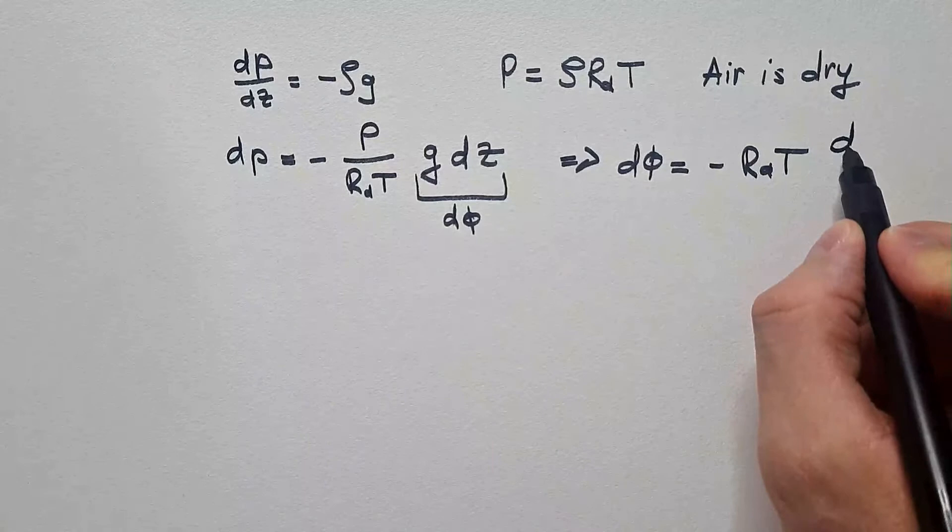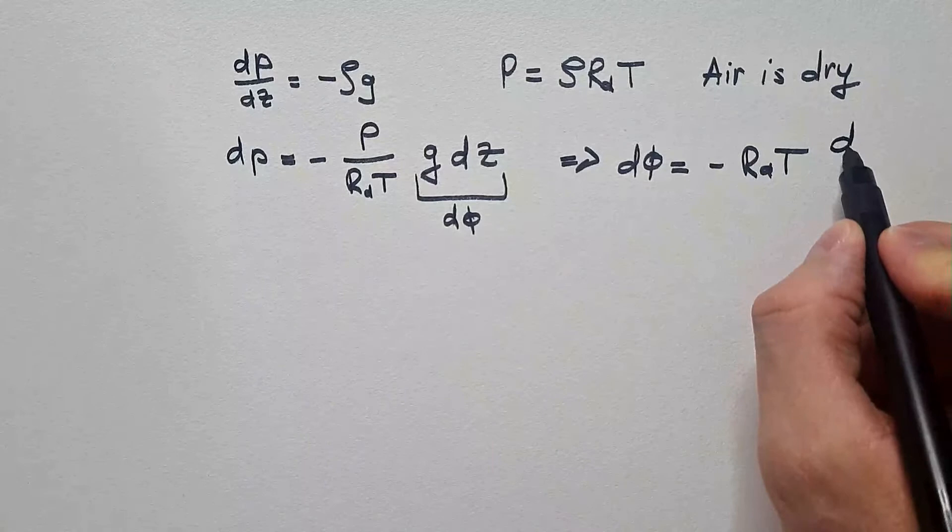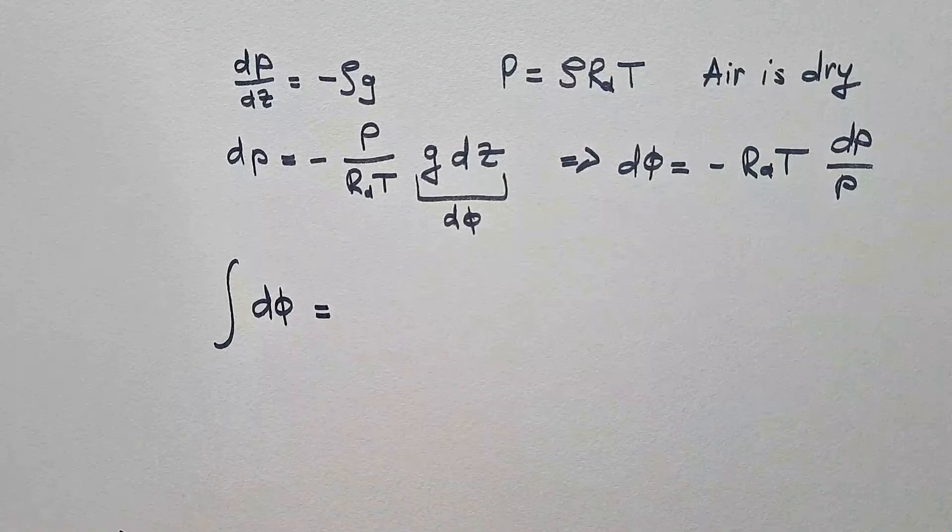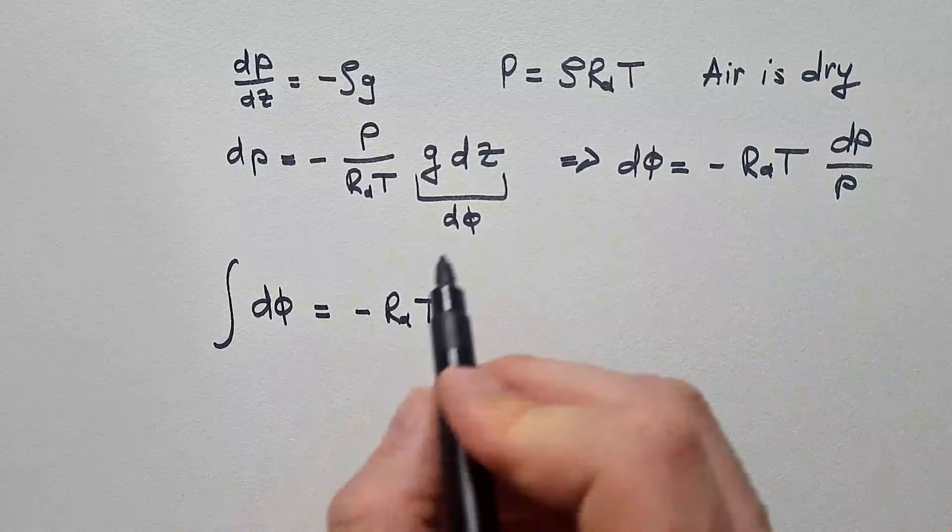Or, if I now integrate this, I will get that integral of dphi is minus RdT integral dp over p.